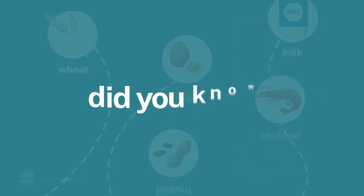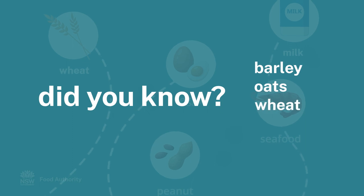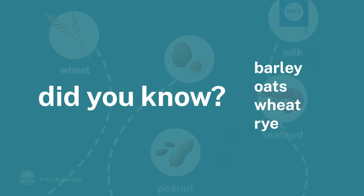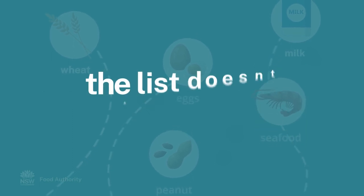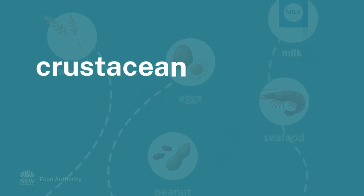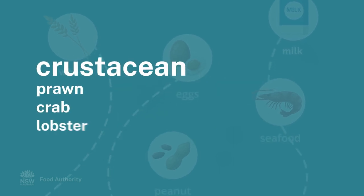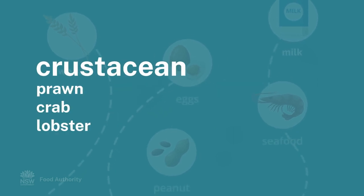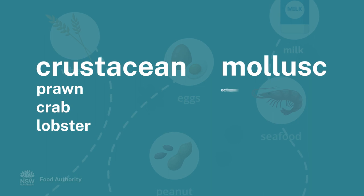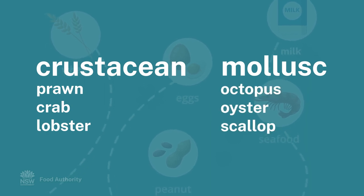Did you know that grains such as barley, oats, wheat and rye must also be declared? The list doesn't end there — crustaceans such as prawn, crab and lobster, and mollusks such as octopus, oyster and scallop are allergens that must be on a food label.